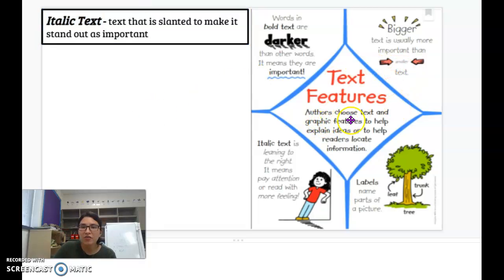So remember, text features. Authors choose text features to help explain ideas or to help readers locate information. So they're very helpful whenever we're reading informational books. So today, whenever I'm reading a biography, I want you to think of all the text features we have gone over.